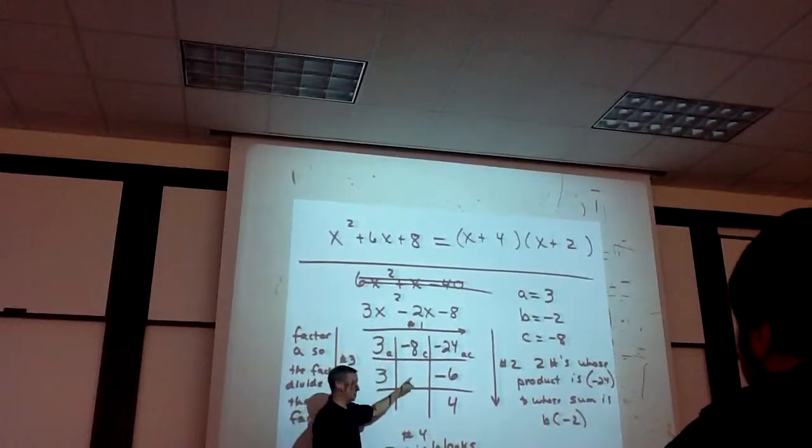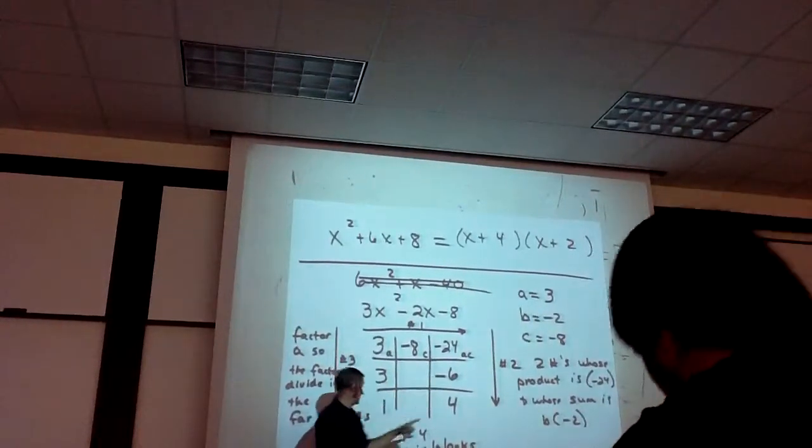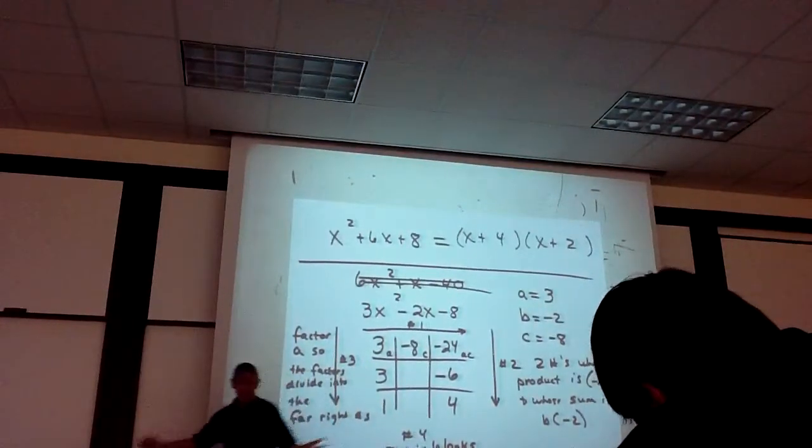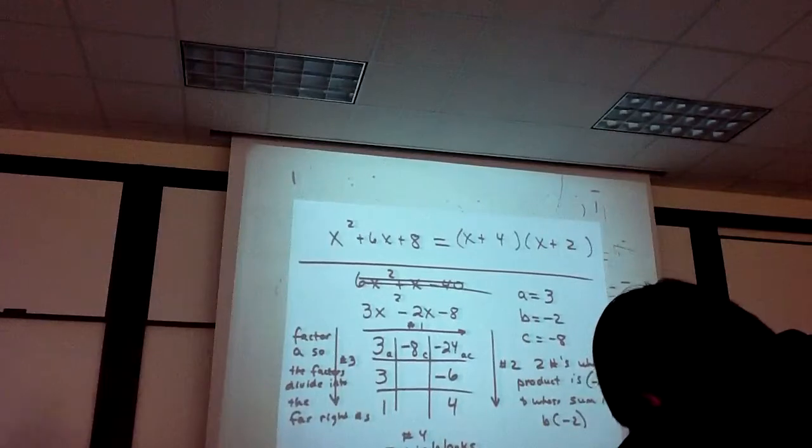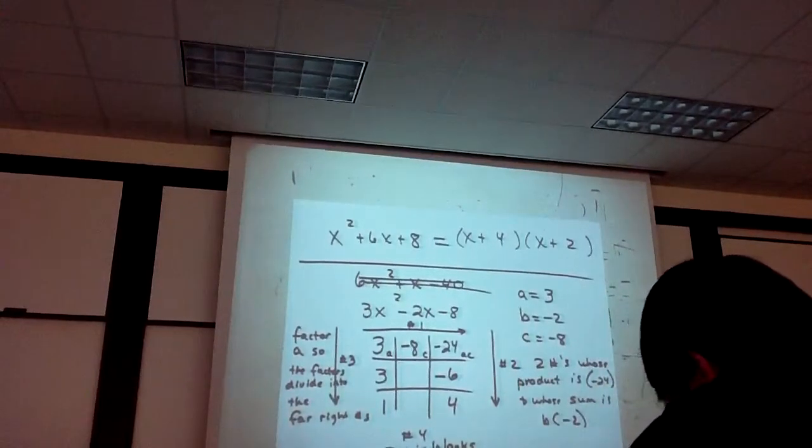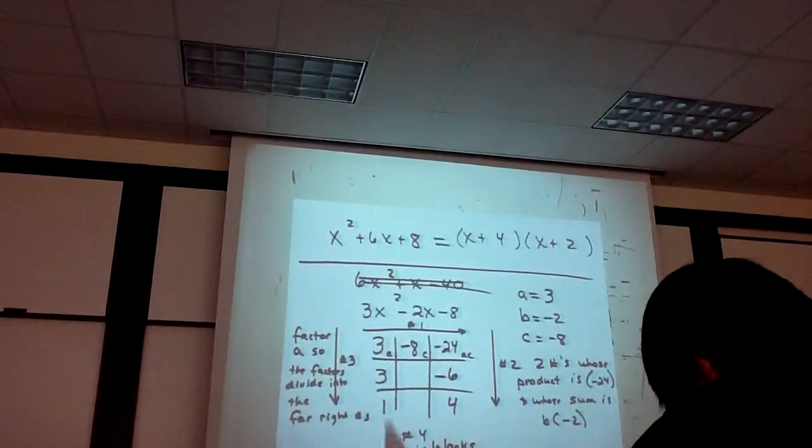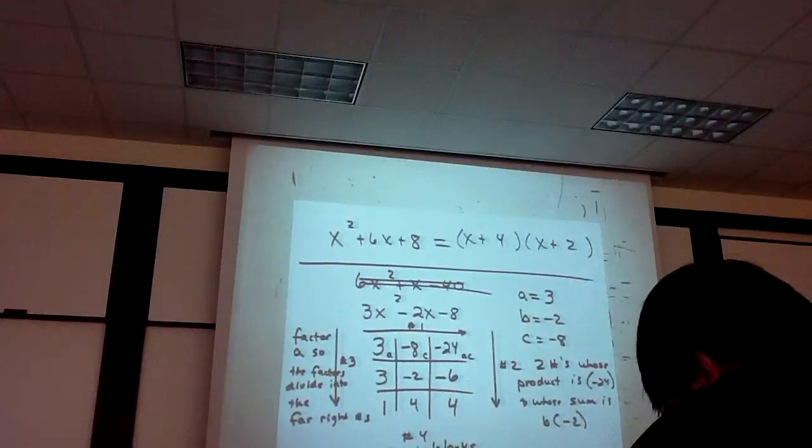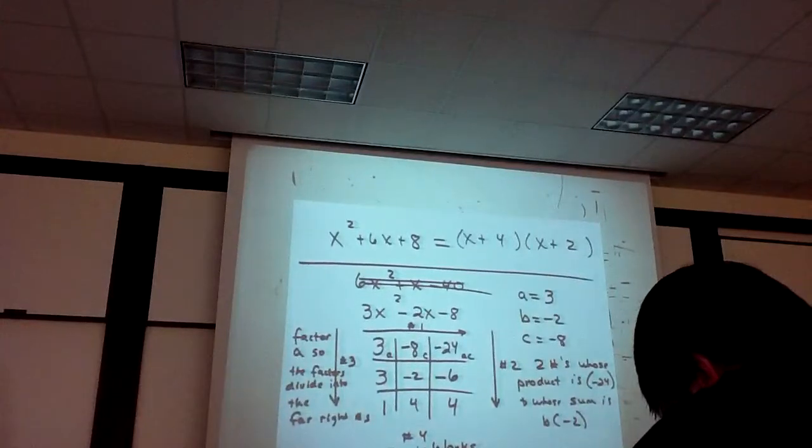3 times negative 2 is negative 6. 1 times 4 is 4. So just fill in to complete the observation that these rows and columns are multiplication problems. 3 times negative 2, 1 times 4. And we've completed the grid. We've done the tic-tac-toe. And our answer is right there.